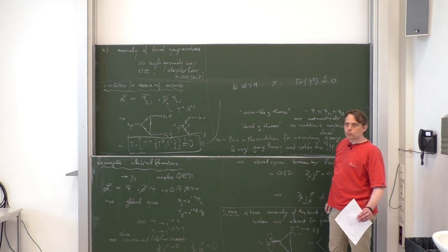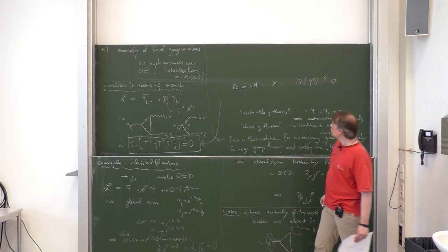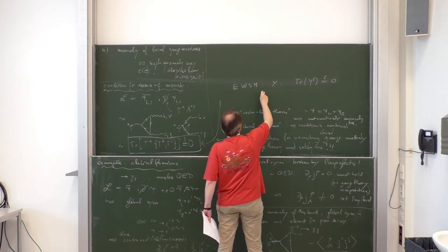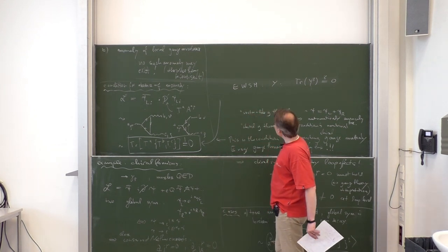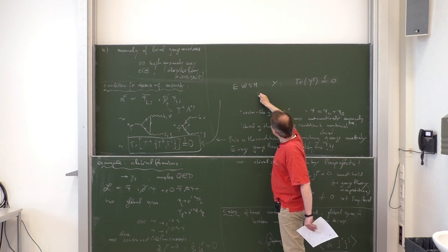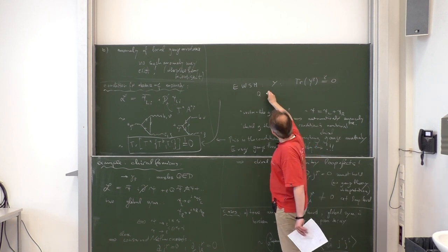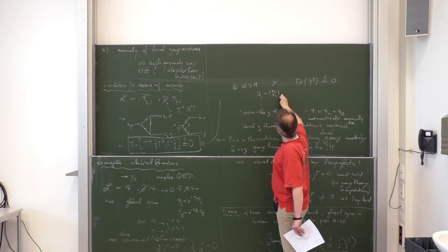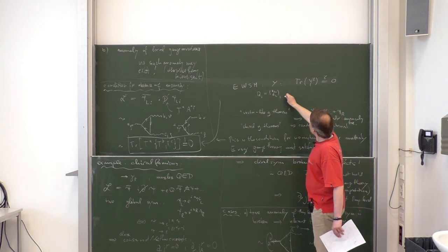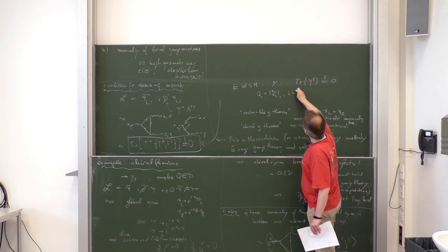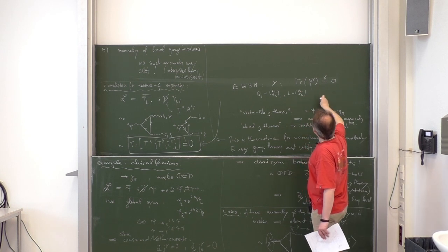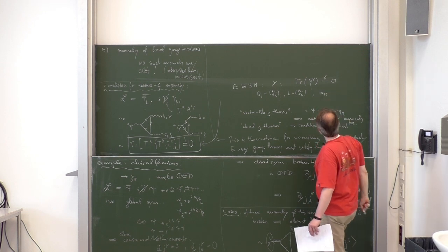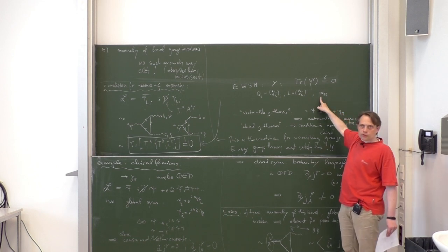Let us check that. What are the left-handed fermions of one generation in the standard model? We have the left-handed quark doublet, consisting of the left-handed up-quark and left-handed down-quark, which comes in three colors. We have the left-handed lepton doublet. We have the right-handed quark singlet, but that should now be converted into a left-handed particle — so we look at the charge-conjugated object, which is also a left-handed fermion field, and it comes in three colors. The same for the right-handed down-quark and for the right-handed electron field.